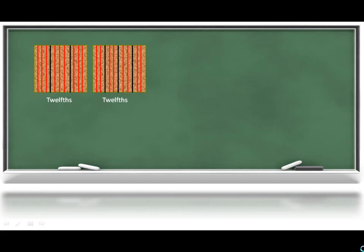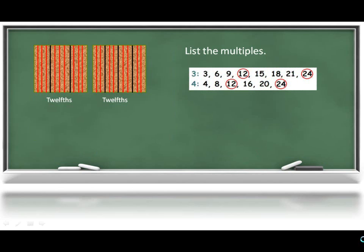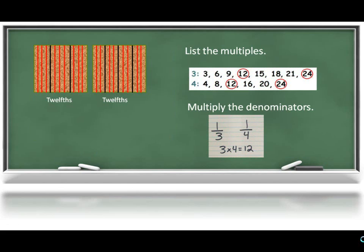Students would then be exposed to several ways that they could have come to a common denominator. For example, listing common multiples or they could multiply the two denominators together in order to get the common denominator of twelve.